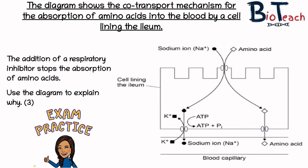The next question shows a diagram of the absorption of amino acids into the blood by the cell lining. From the diagram you can see it's not too dissimilar from the diagram shown earlier, but this time it's talking about amino acids. The question says that a respiratory inhibitor was added and that stops the absorption of amino acids — you need to use the diagram to explain why, for three marks. Have a look at the diagram, pause the video, answer this question in your notes, and then I'll go through it with you.